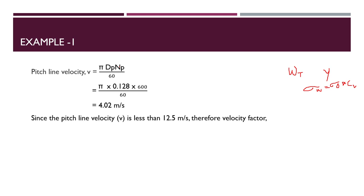Since the pitch line velocity is less than 12.5 m/s, Cv = 3/(3 + V) = 3/(3 + 4.02) = 0.427.